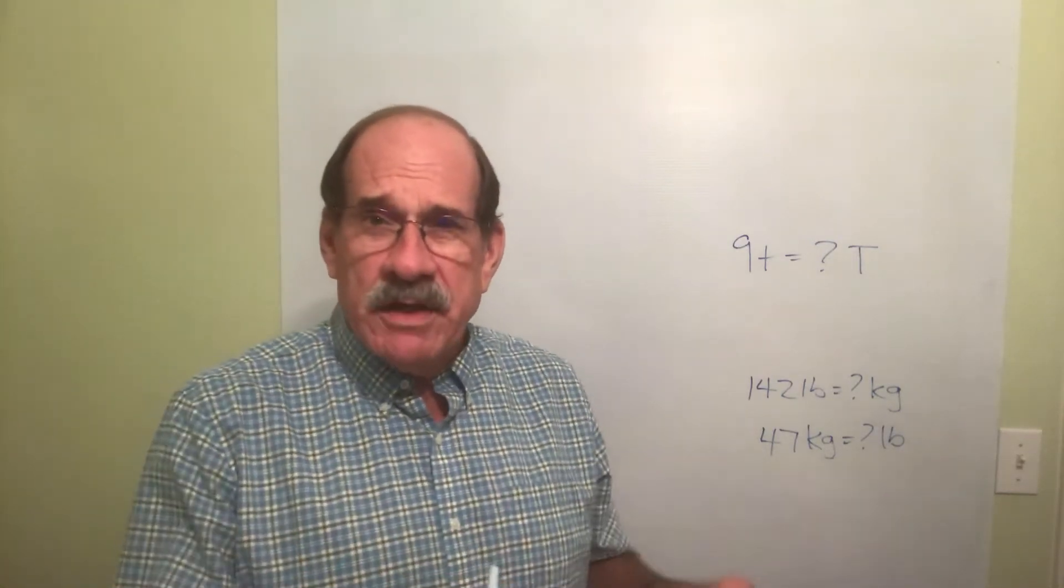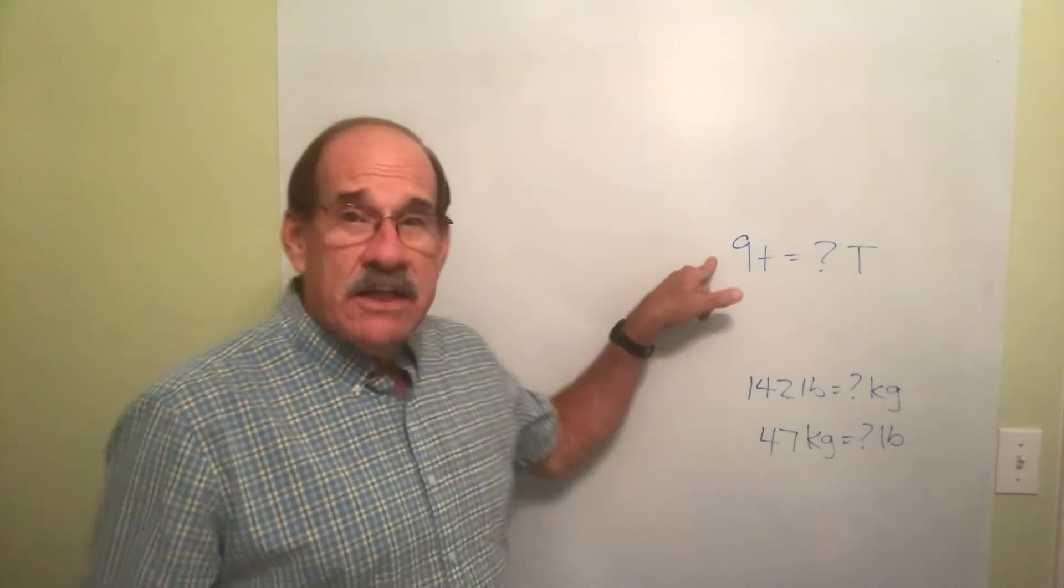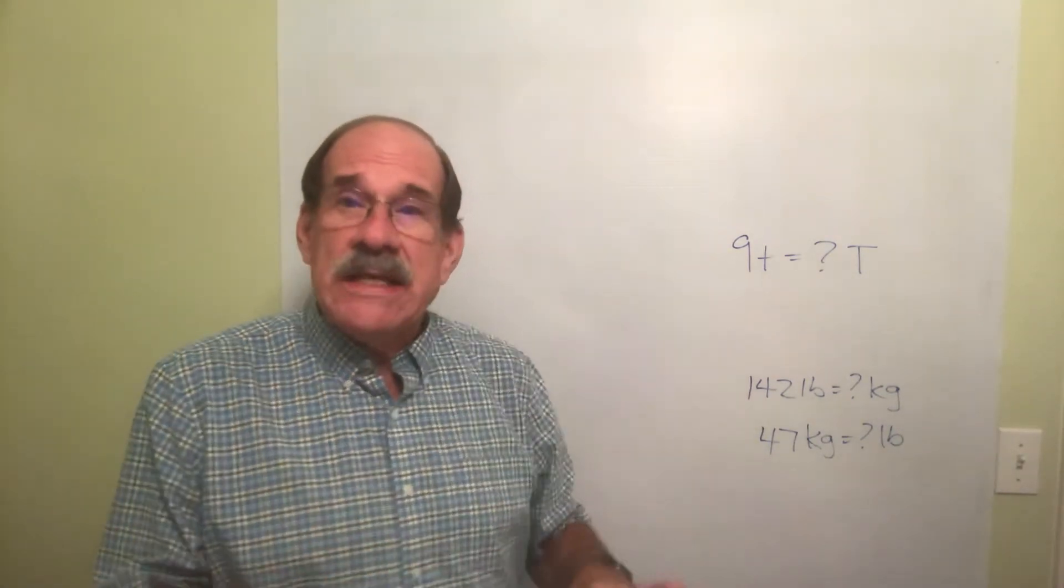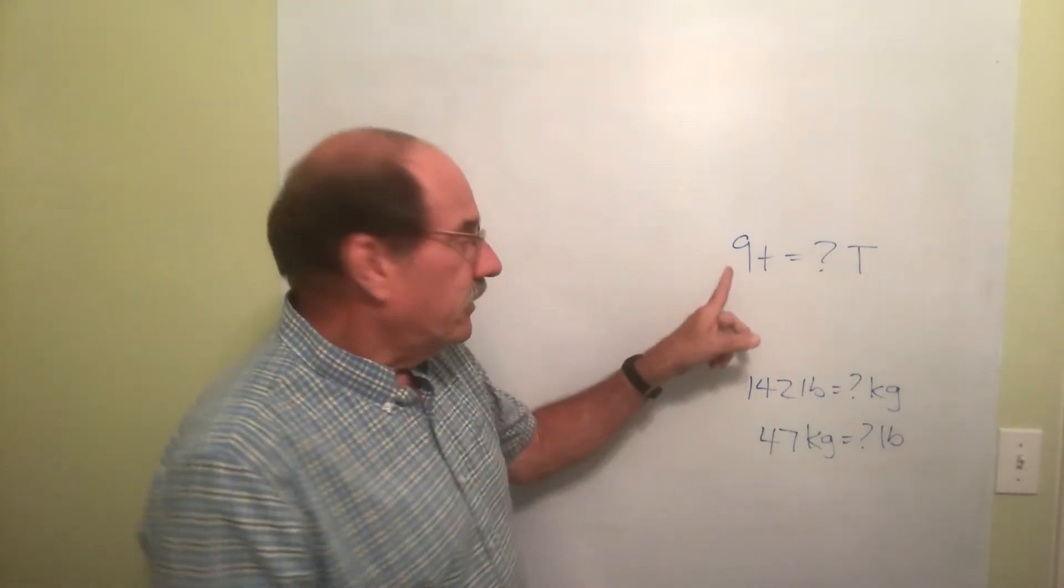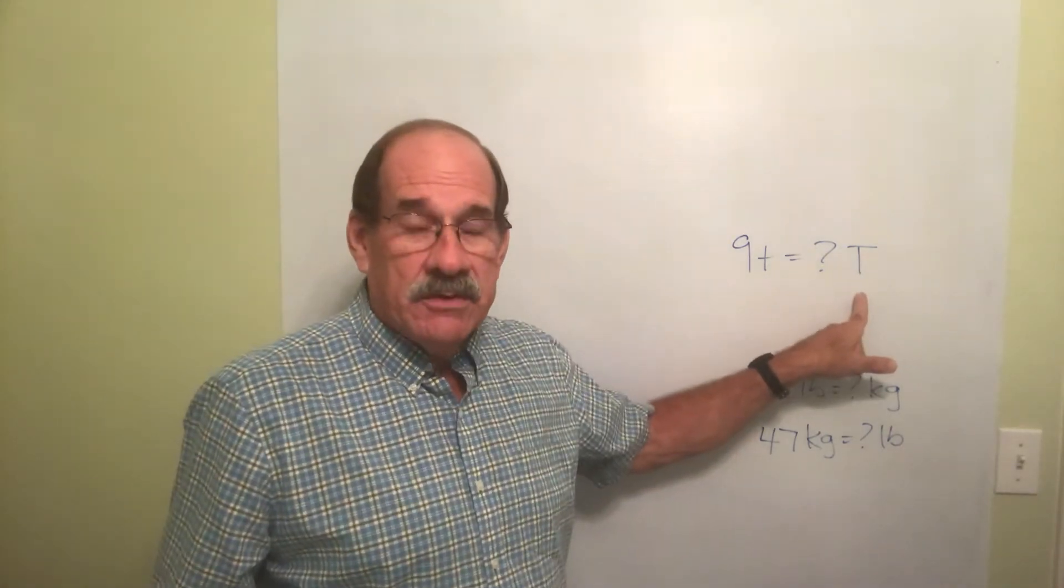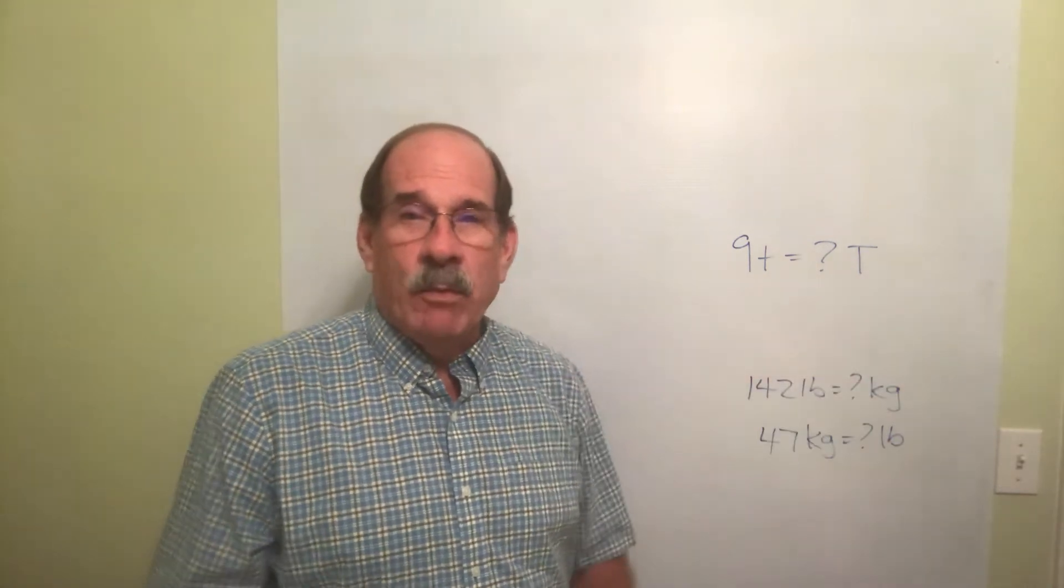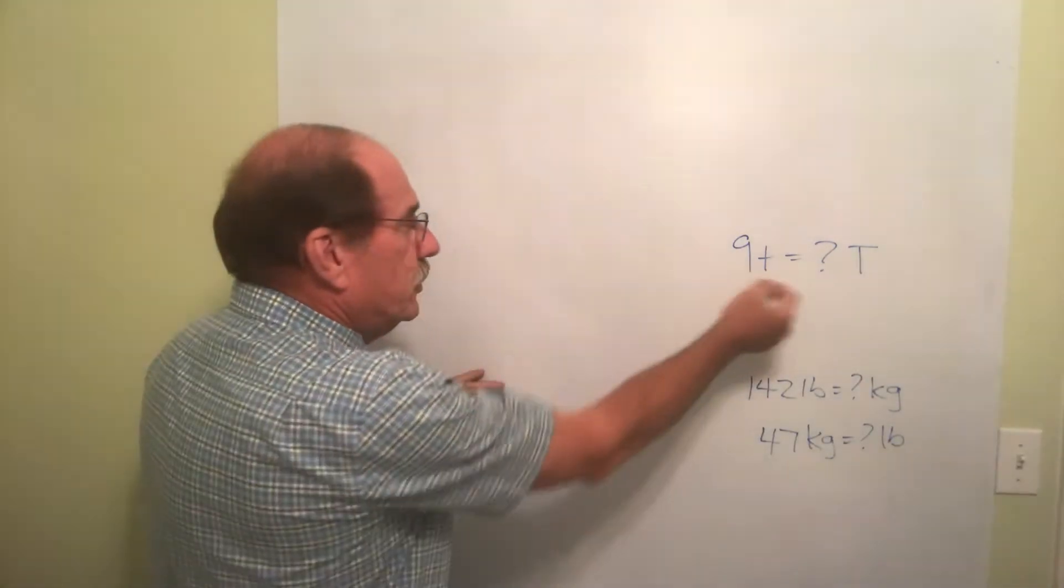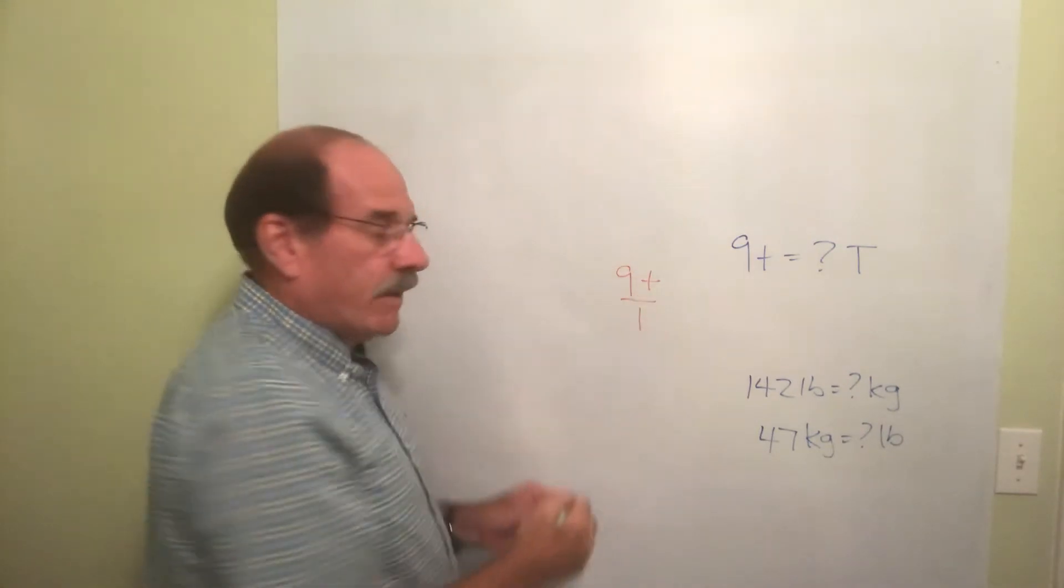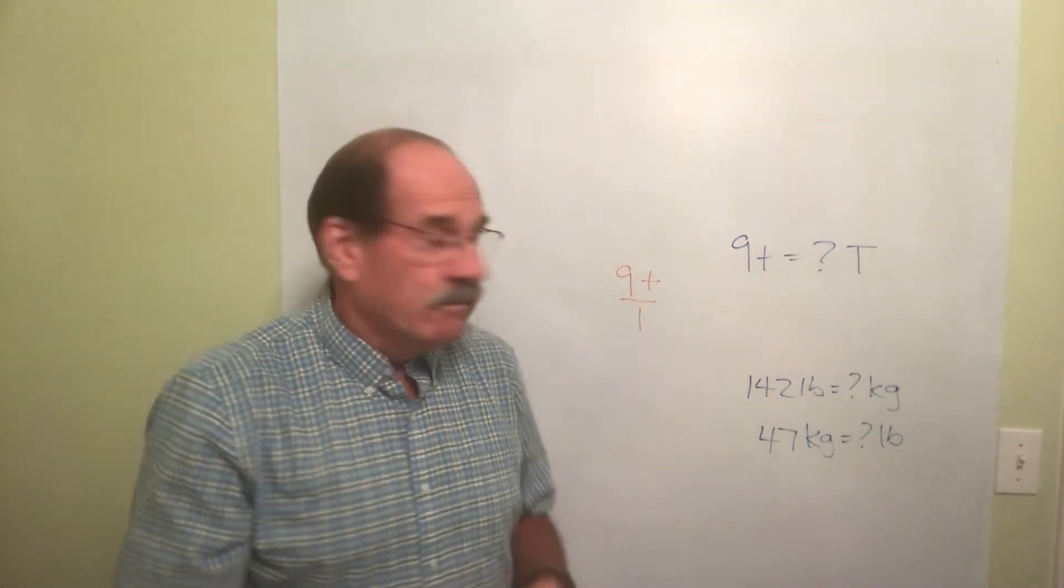Now I stopped in the previous video and did this problem, but I want to show you another way it can be done. Let's convert nine teaspoons and see how many tablespoons that is. Basically, you set it up one more time. What you know: nine teaspoons, put it over one. I'm gonna multiply by a second fraction.